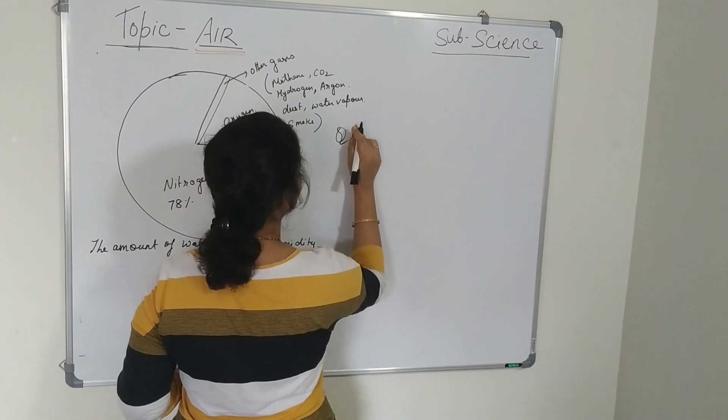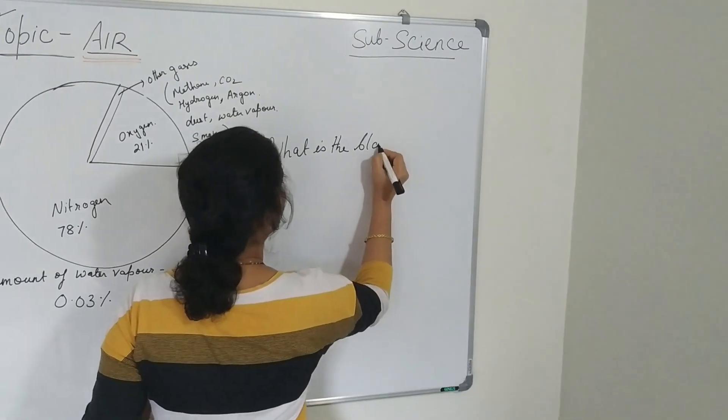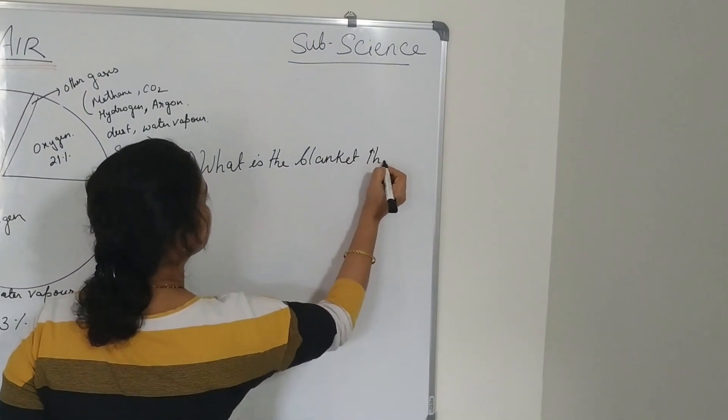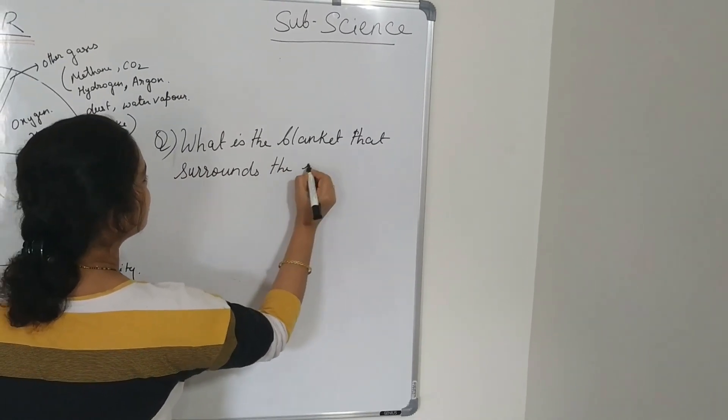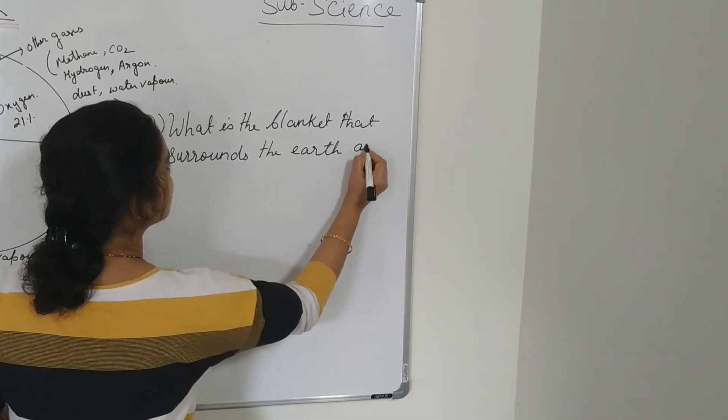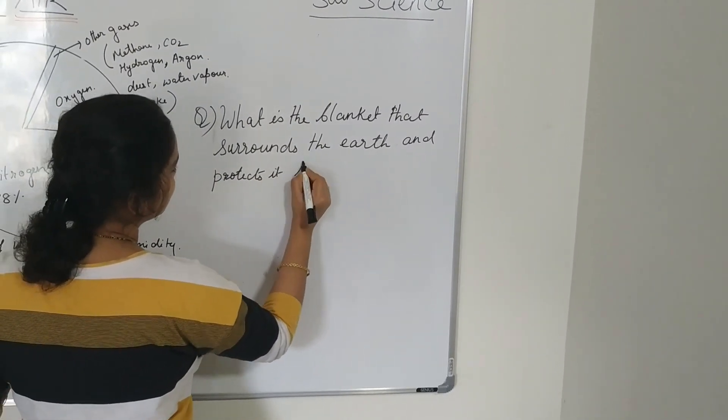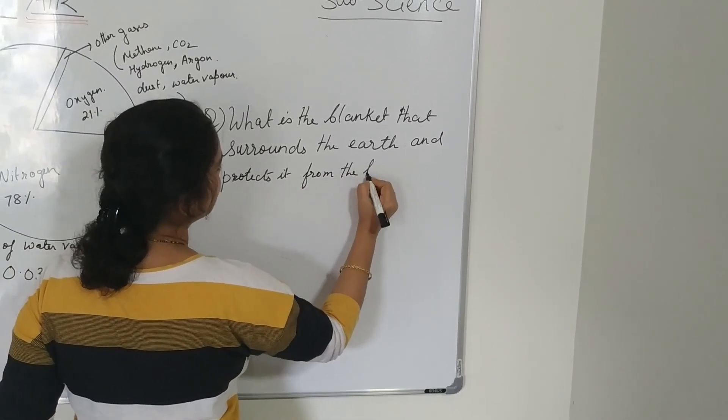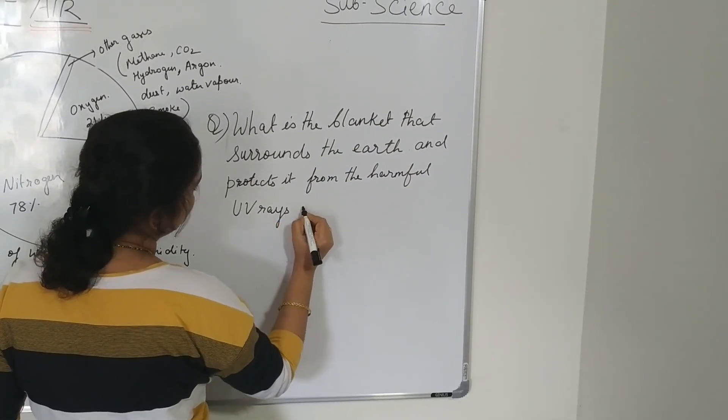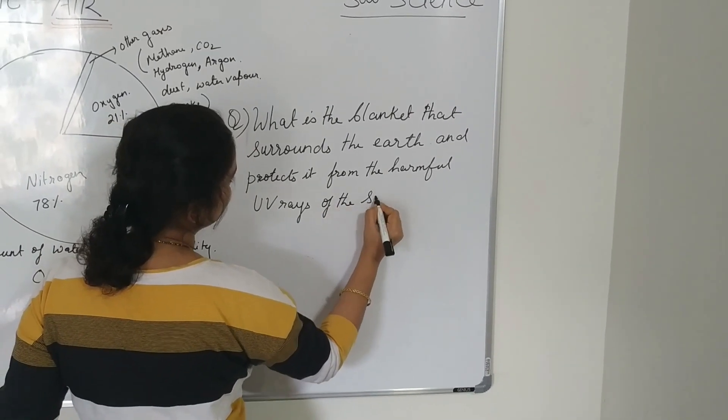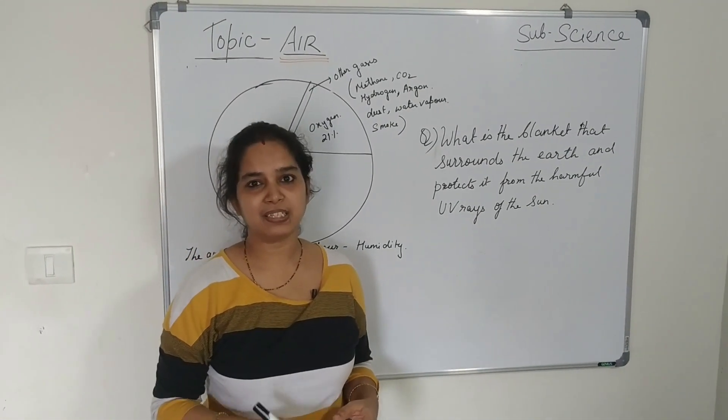Well, I have one question for you. What is the blanket that surrounds the earth and protects it from the harmful ultraviolet rays of the sun? And you can write the answer in the comments below. If you like my channel, please subscribe it. Thank you.